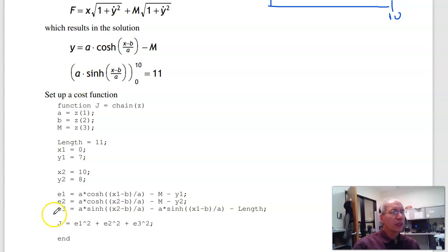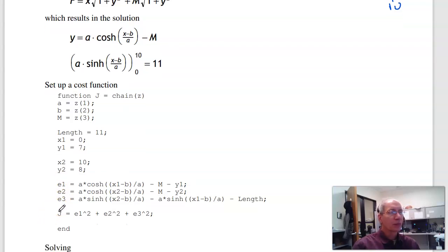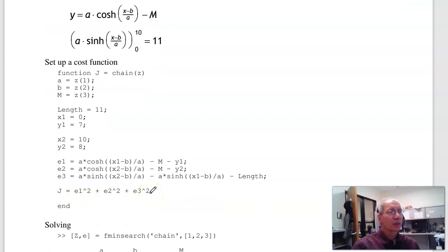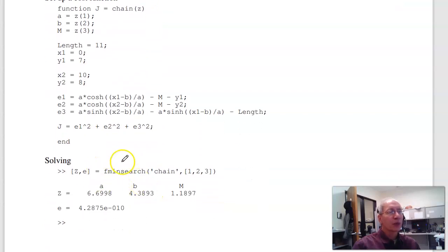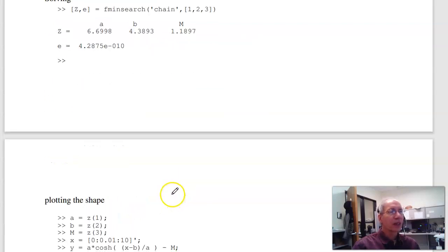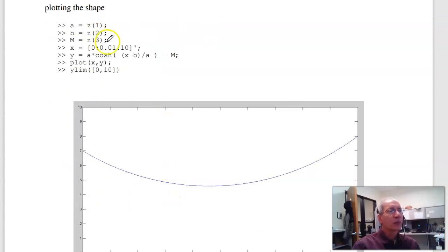Call that e1, e2, e3. Find a, b, and m to minimize these, make them all zero. So return the sum squared error. Same trick as before: use fminsearch to find a, b, and m, and you get your solution. Error zero, basically that means these are correct. So if I plot it, here's a, b, and m, here's the equation for it.